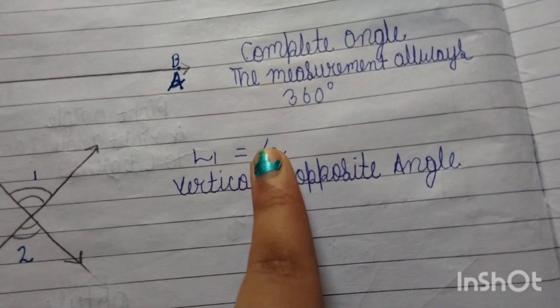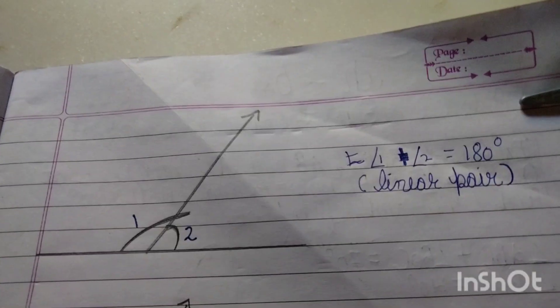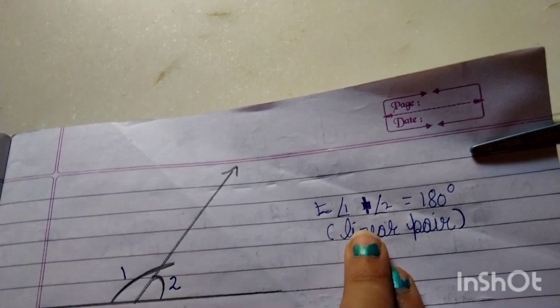Vertically Opposite Angles: Angle 1 equals Angle 2. Linear Pair Angle: Angle 1 plus Angle 2 equals 180 degrees.